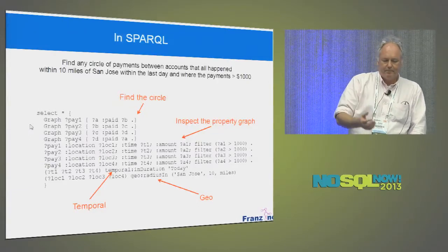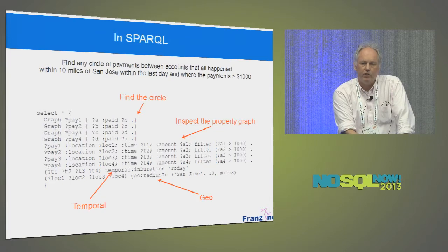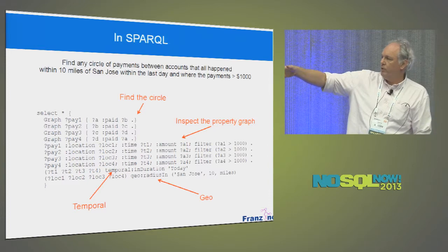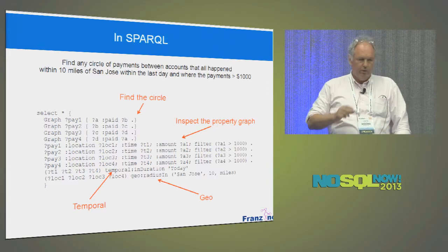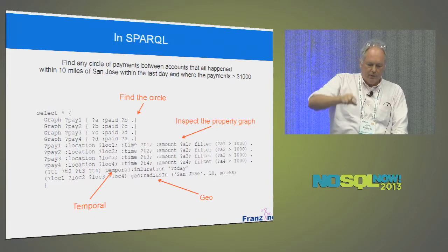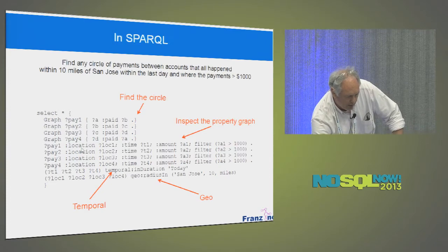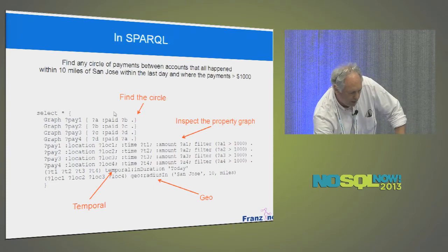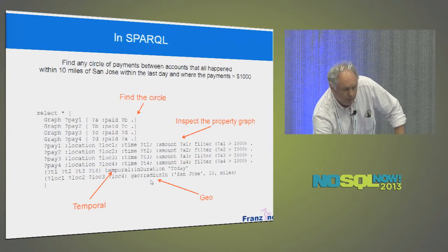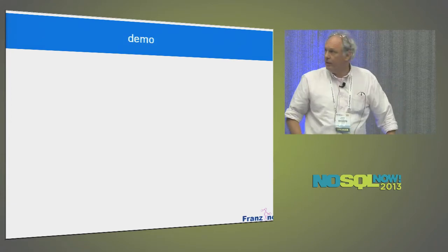I can do queries in SPARQL, the W3C language for RDF graph databases. Here's a query where we try to find a ring of payments: the first part finds the circle and the handles for the payments, then we look at the property graph for each of those links and say it has to be today and within 10 miles of San Jose.